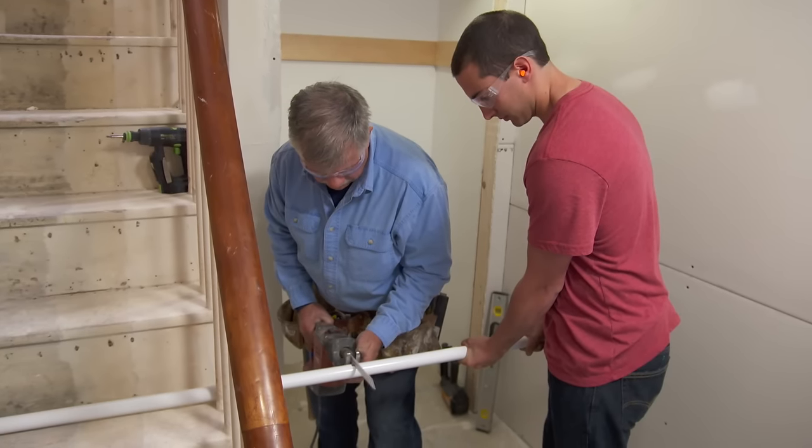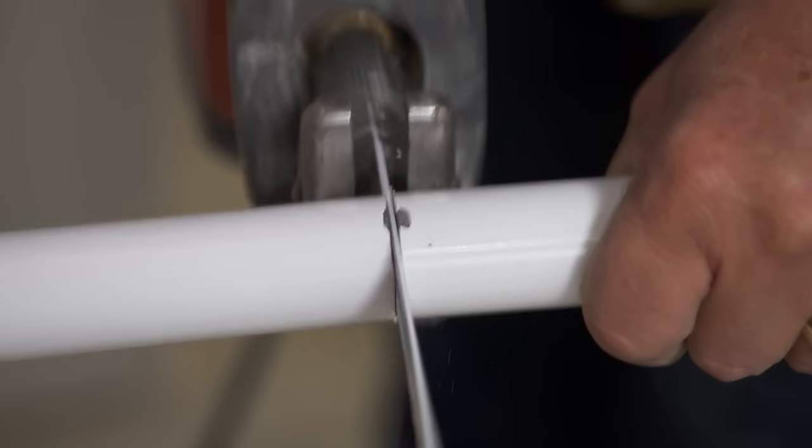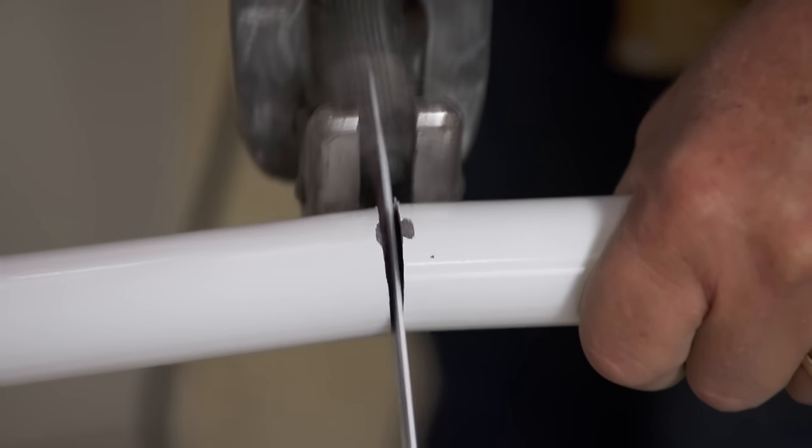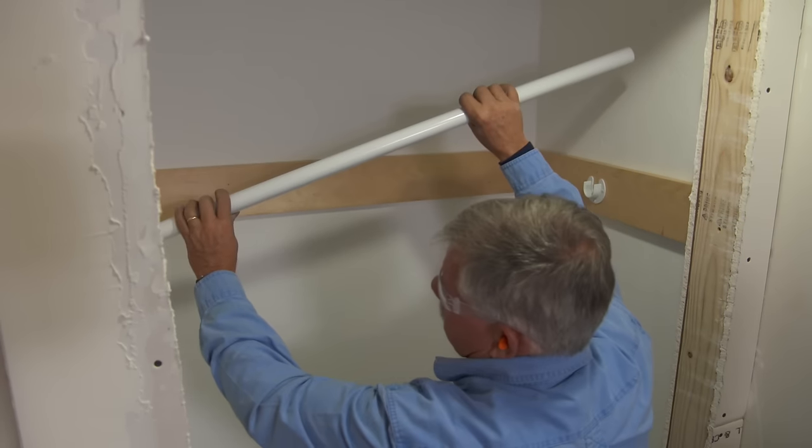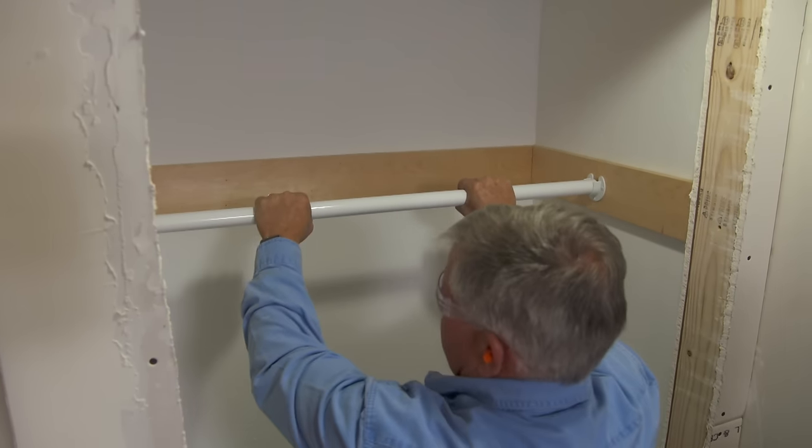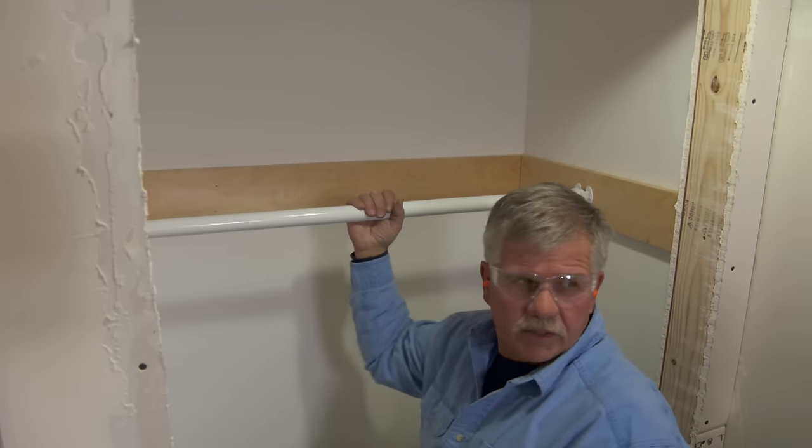The closet pole comes in a six foot length. I'll cut it to size using my reciprocating saw. All right, let's see how it fits. Nice. And that's good and strong. That'll hold plenty of coats.